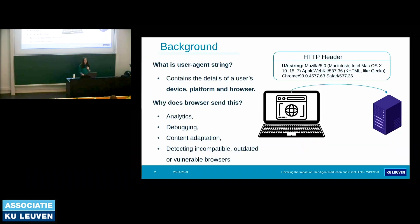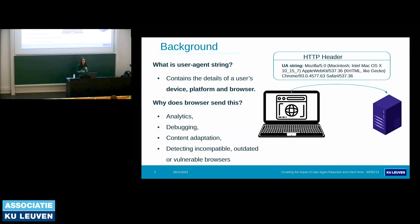First, I would like to talk about what user agent string is and what it is used for. User agent string was first introduced in 1992 for statistical purposes and also tracing protocol violations. However, the modern user agent string contains more extensive information about the user's device, platform, and browser.